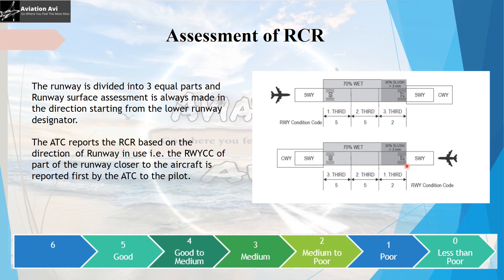If the runway in use is runway 27 and the aircraft is approaching on runway 27, then this part of the runway becomes the first third, this becomes the second third, and this becomes the third third. Basically, if the aerodrome operator assesses the runway condition code as 552, the ATC reports it as 552 when runway 09 is in use, and as 255 when runway 27 is in use.